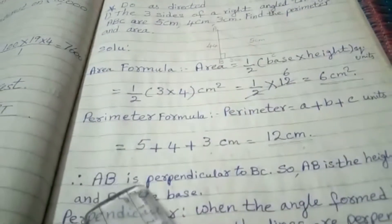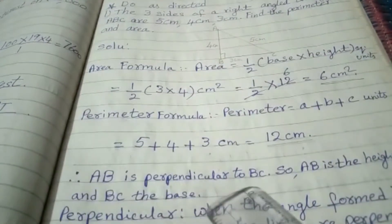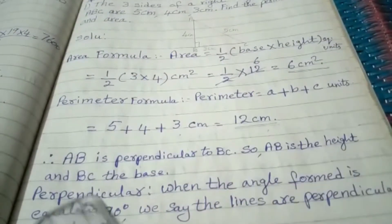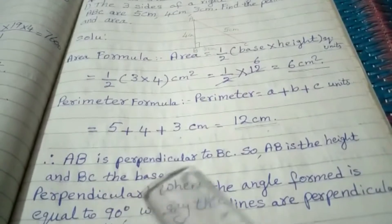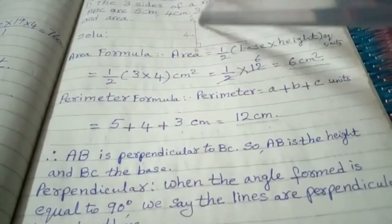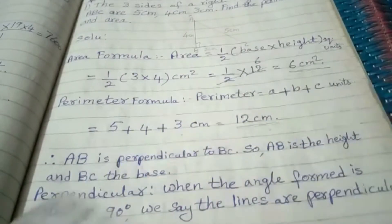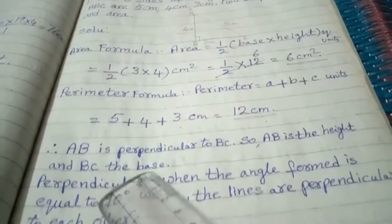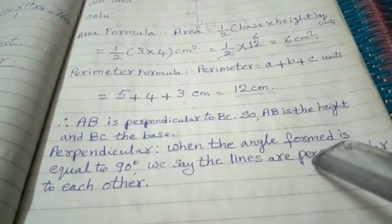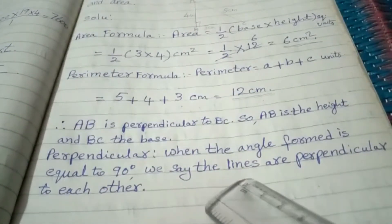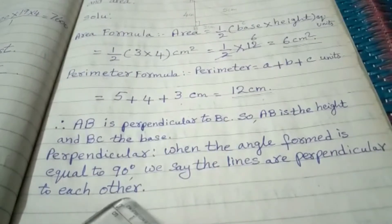Note: AB is perpendicular to BC. So AB is the height and BC is the base. See here, AB is the height and BC is the base. Perpendicular means when the angle formed is equal to 90 degrees, we say the lines are perpendicular to each other.